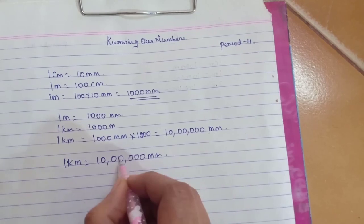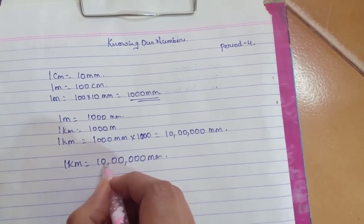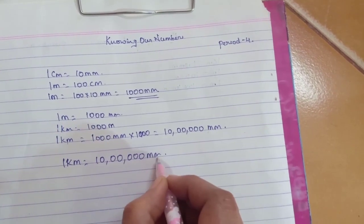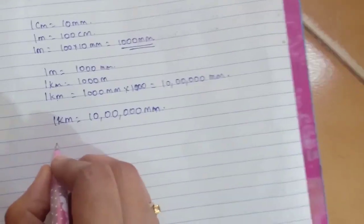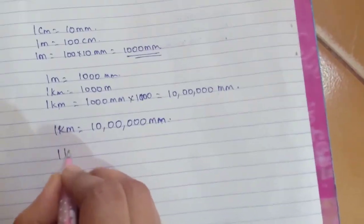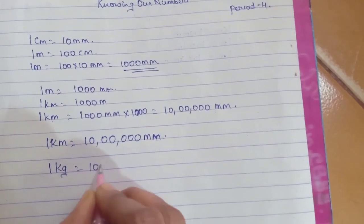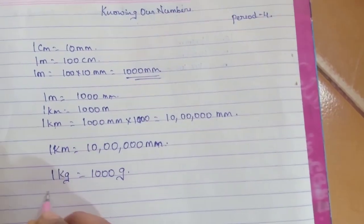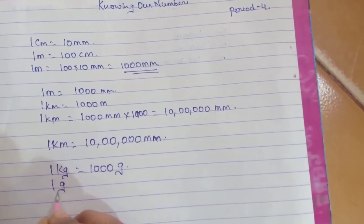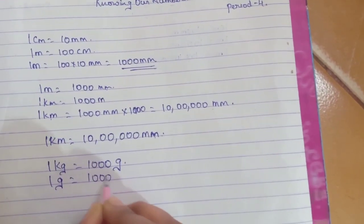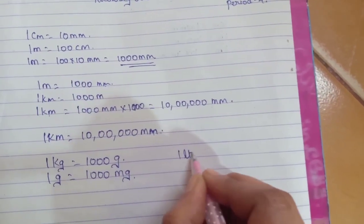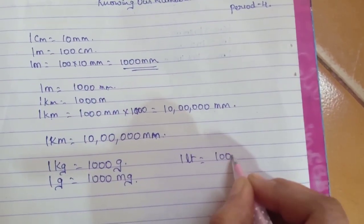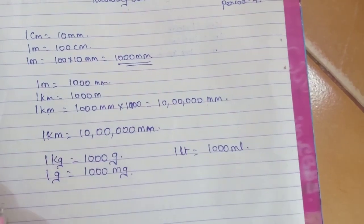So 1 km is 10 lakh mm — that is 1, 10, 100, 1000, 10,000, 1 lakh, 10 lakhs. 1 km is 10 lakhs mm. Similarly, 1 kg is 1000 grams, 1 gram is 1000 milligrams, and 1 litre is 1000 ml.